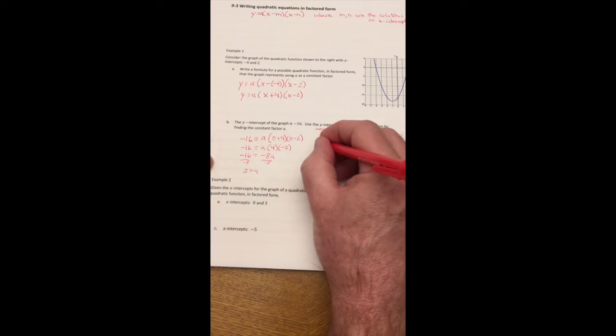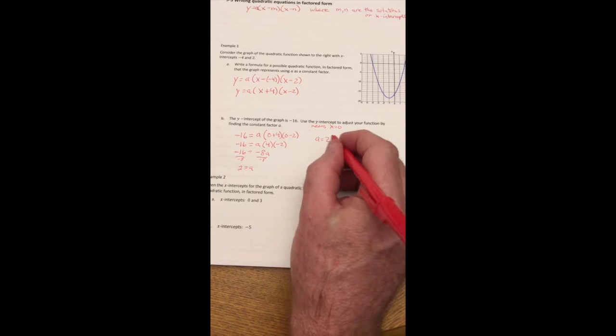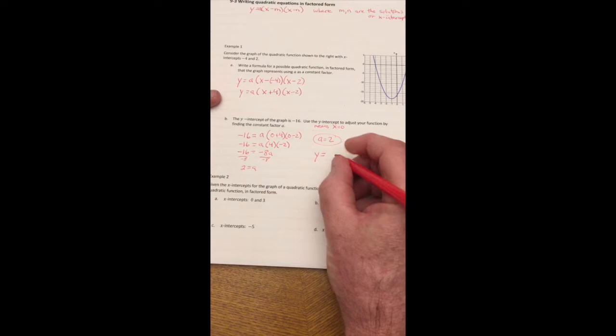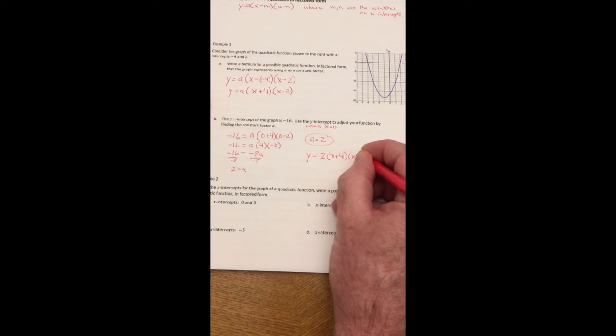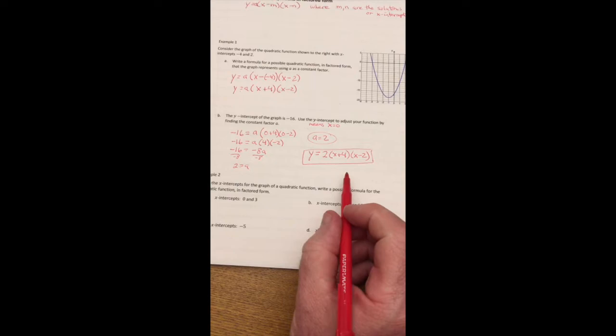So 2 equals A. Or in this case, the A equals 2. So if it says solve for A, that's fine. But if it says write the full equation, I go back to my equation and I fill it in. So for A, I put in 2. X plus 4. X minus 2. And that is how you write the quadratic equation.